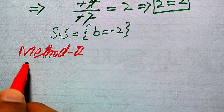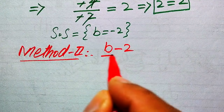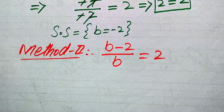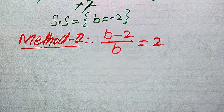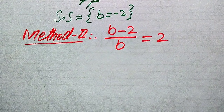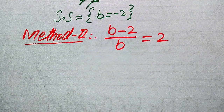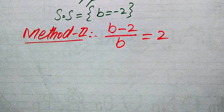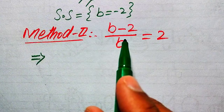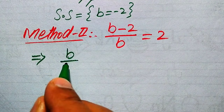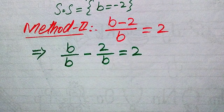In the second method we copy down the given question statement: b minus 2 divided by b equals 2. Here we solve this problem using a different approach — a very quick method. We break this fraction, and when we break it, it is written as b over b minus 2 over b equals 2.